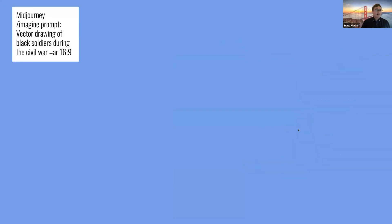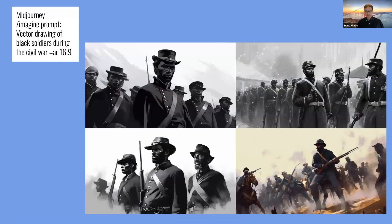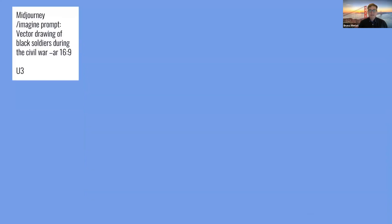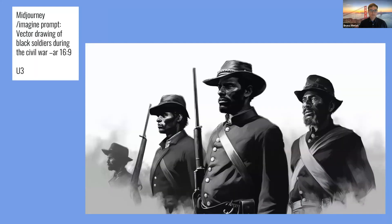Here's another example — I asked it to give me a vector drawing of a Black soldier during the Civil War with an aspect ratio of 16 to 9. It gives you four different options to choose from. You can see a variety of different styles — one is in color, three are in black and white. Then you say, 'I like number three — can you give me the full size file?' They're numbered with one and two at the top, three and four at the bottom. There's a button titled U3 — you click on that and it gives you the full size image. The audience noted that graphic artists across the country are probably not happy about this technology.